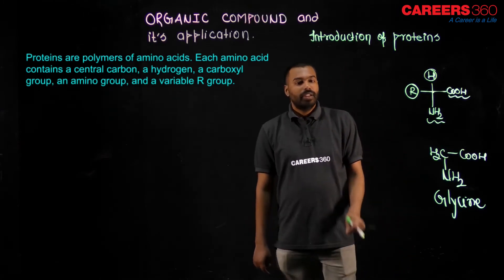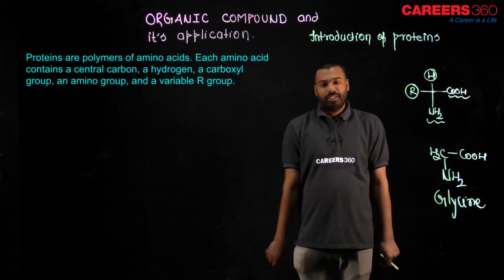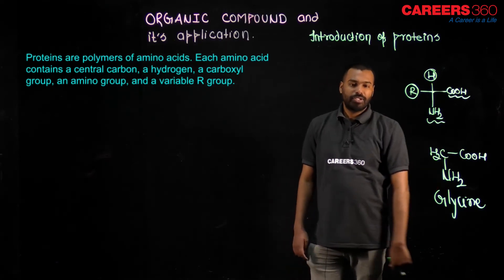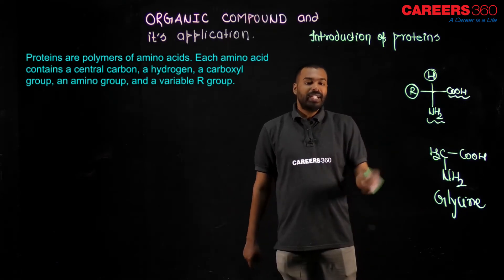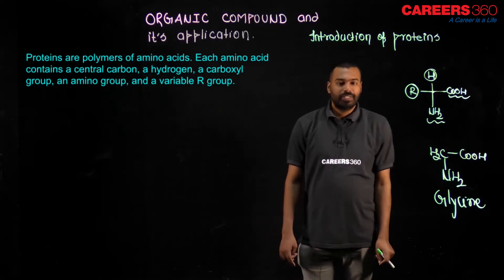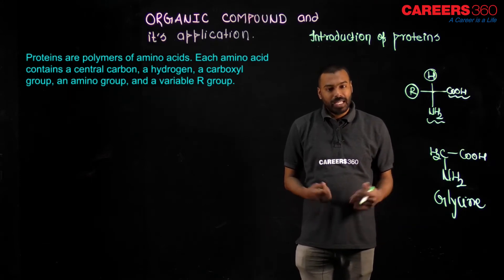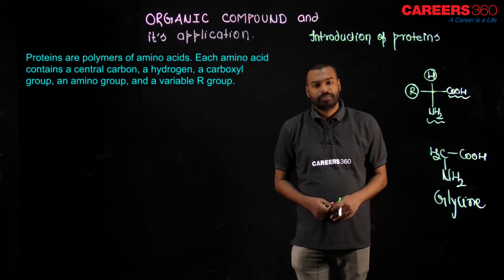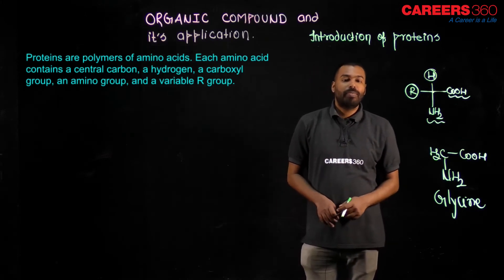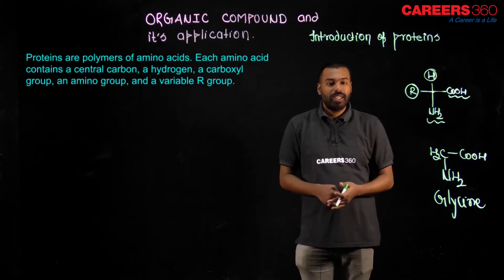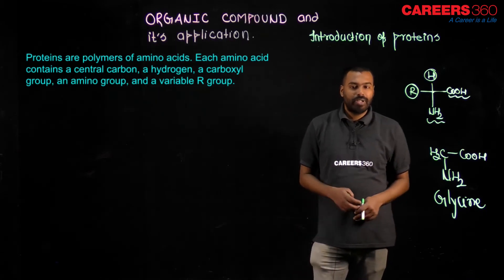If an exam question asks 'which of the following is the smallest possible amino acid,' the answer is glycine. The second important point about glycine is that while amino acids are normally optically active, glycine is the only amino acid which is optically inactive.